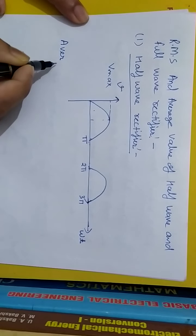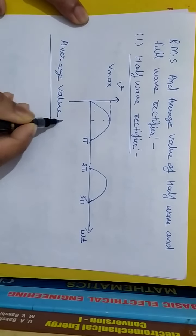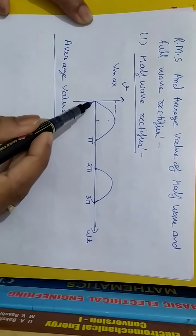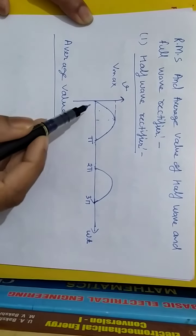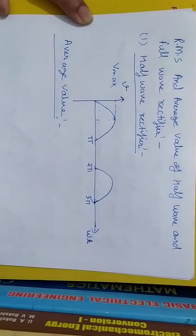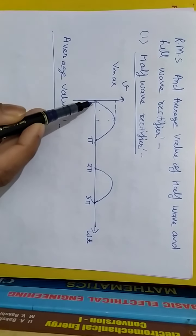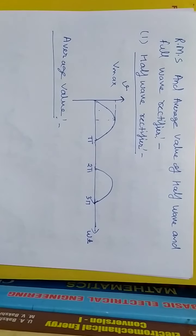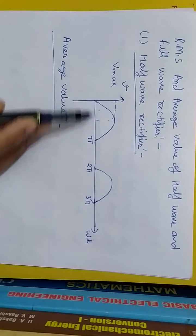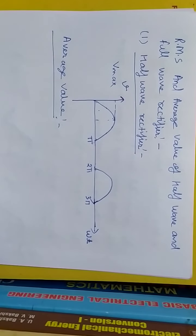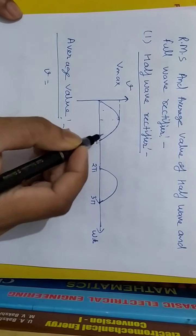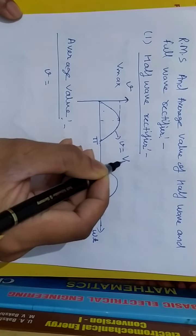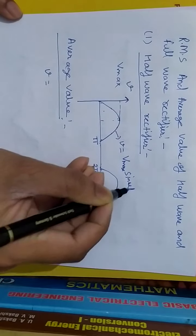Now let's calculate the average value of the half wave rectifier. Average value means the sum of instantaneous values at different instants divided by the number of instants. If I need the sum of voltages I integrate the output waveform within the limit for one cycle. The instantaneous value v equals to Vmax sin omega t.